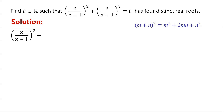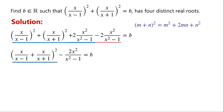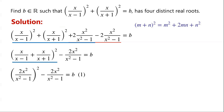So we can now write: [x/(x−1)]² + [x/(x+1)]² + 2x²/(x²−1) − 2x²/(x²−1) = b. The first three terms on the left-hand side equal [x/(x−1) + x/(x+1)]² = 2x²/(x²−1). So the equation becomes [2x²/(x²−1)]² − 2x²/(x²−1) = b. We label this as equation 1.